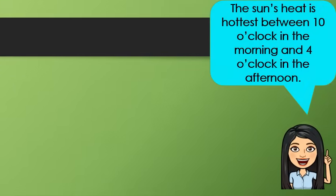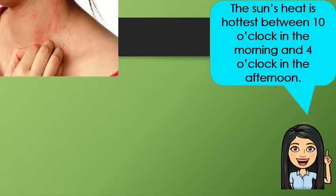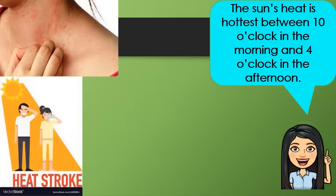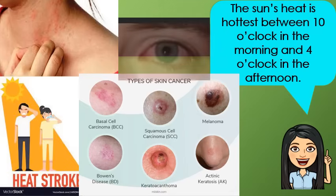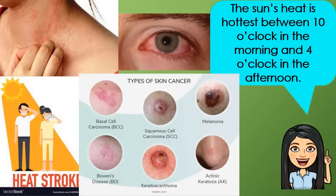The sun's heat is hottest between 10 o'clock in the morning and 4 o'clock in the afternoon. Overexposure to the sun's rays can cause sunburn, skin rashes, headaches, and stroke. The sun's rays can damage the skin and can cause skin cancer. It can also damage your eyes. Protect them from the sun.